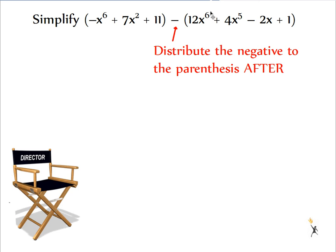I'm not just subtracting 12x to the 6th. I'm subtracting 4x to the 5th. I'm subtracting a negative 2x. And I'm subtracting a 1. So I need to distribute the negative to whatever comes after it.